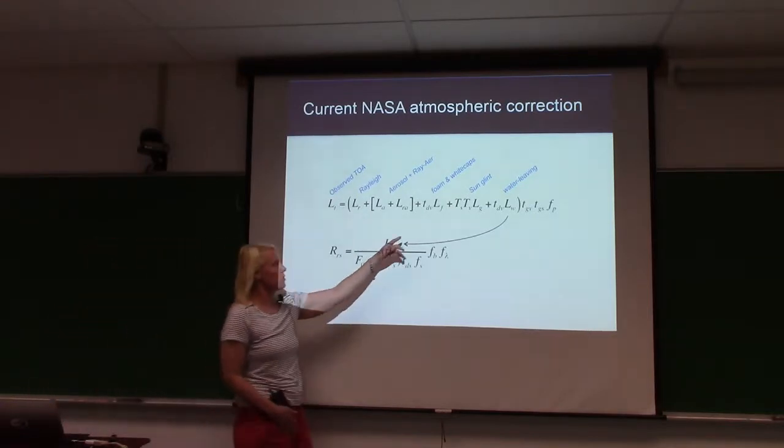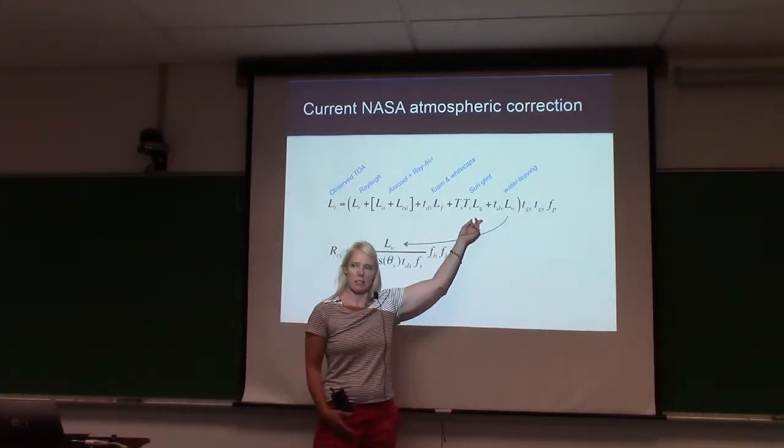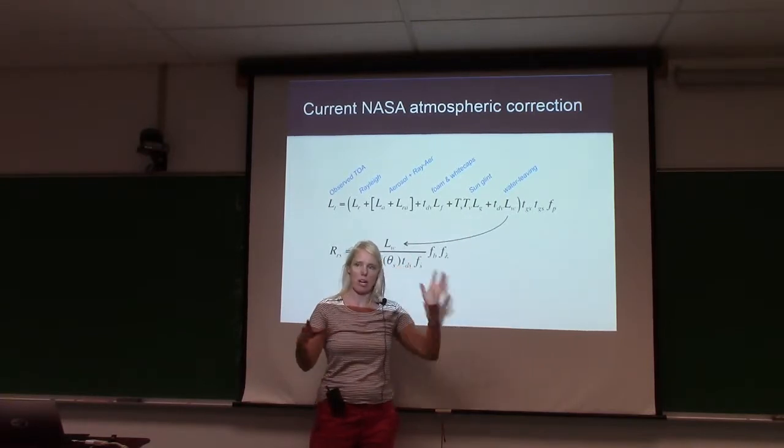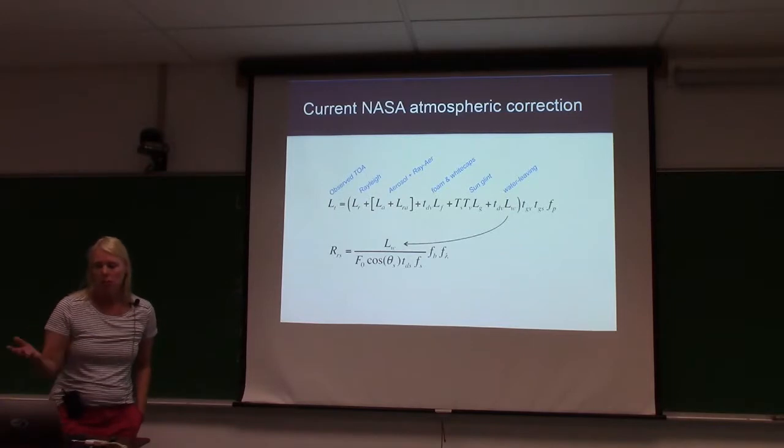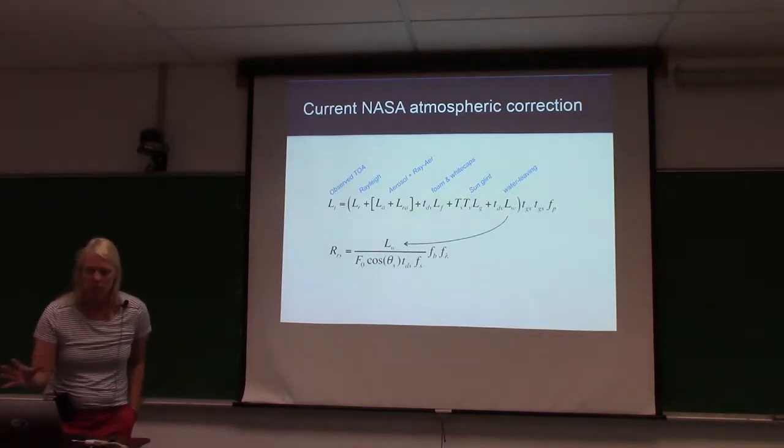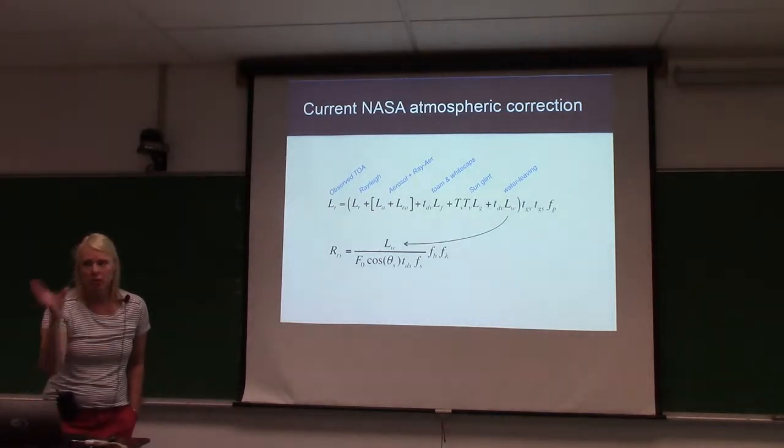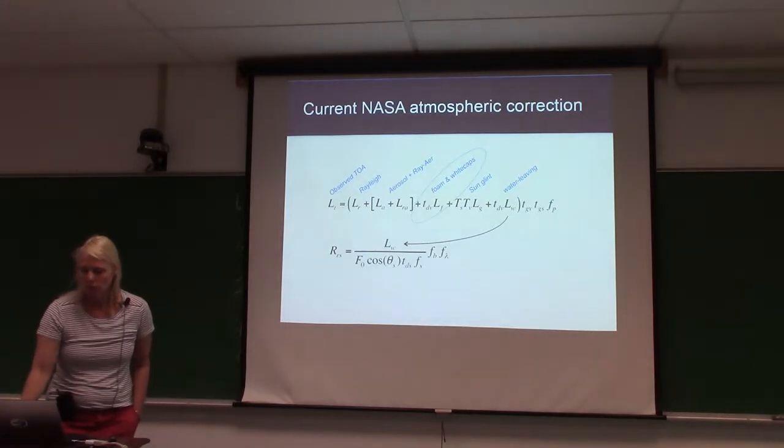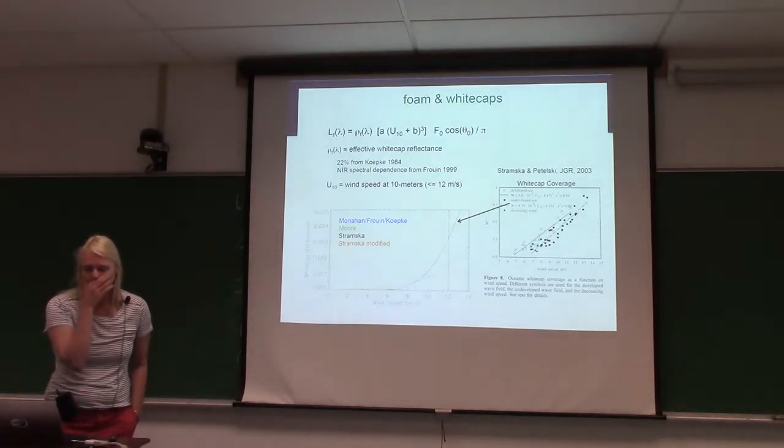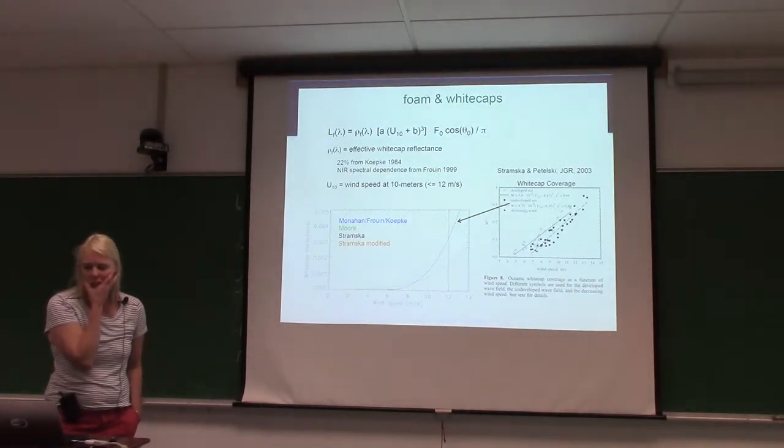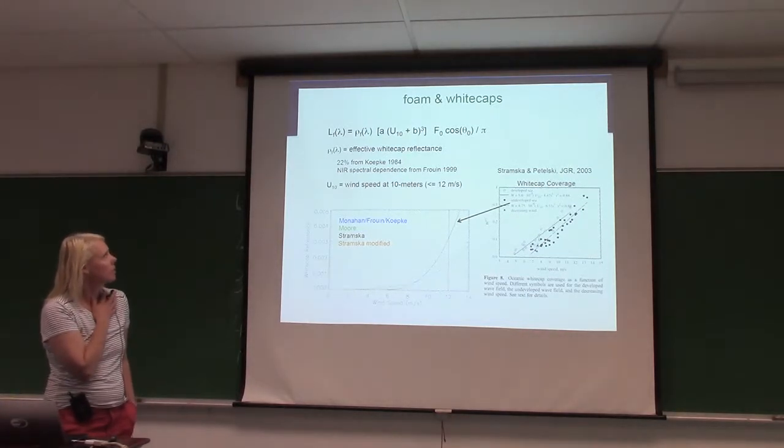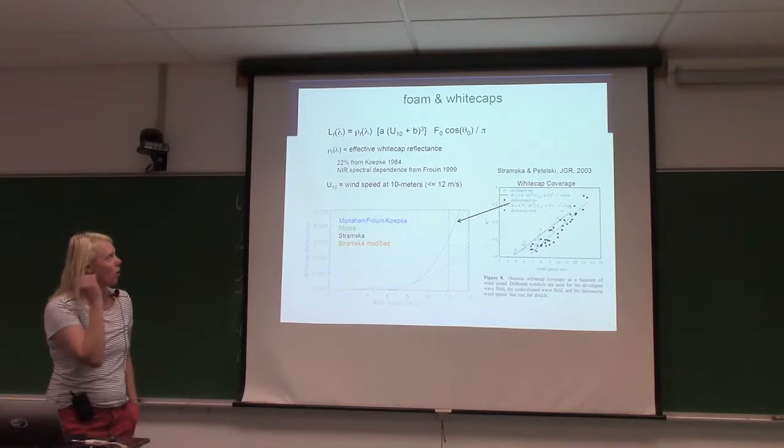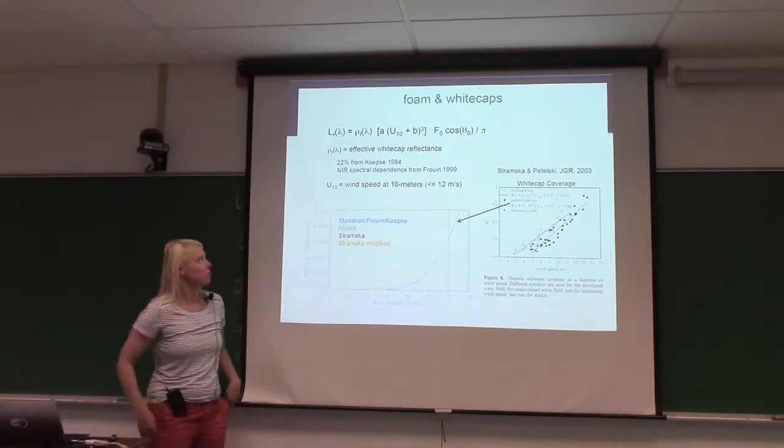We also throw a lot of data out from sunglint and sometimes I think that's a little extreme. But for ease and consistency, we've been losing a lot of pixels. So here's the current approach. When you get your data, basically we say all whitecaps are 22% reflective.